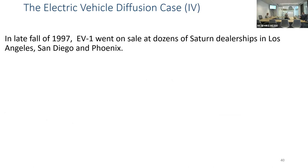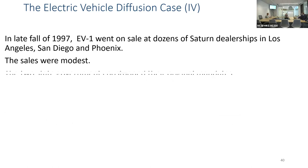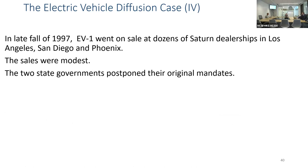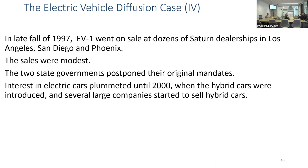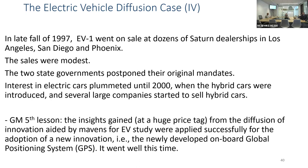In 1997, GM produced enough EV1s to go on sale at Saturn dealerships in Los Angeles, San Diego, and Phoenix. But people didn't want to buy them. The two states were forced to postpone their original mandates, interest in electric cars plummeted, and hybrid cars started to be produced by large manufacturers with much better success. GM had poured about $2 billion into this, but they did gain significant insights about diffusion of innovation, which they used very successfully when adopting GPS navigation systems into GM cars.